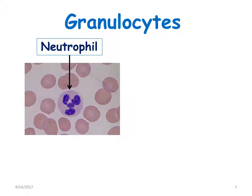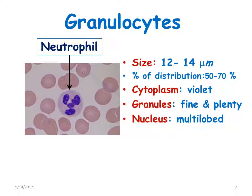Now let us look at each granulocyte individually. Neutrophils are around 12 to 14 micrometers in diameter, with a percentage distribution of 50 to 70%. The cytoplasm is violet in color. The granules are fine and plentiful, and the nucleus is multi-lobed.